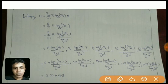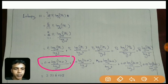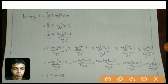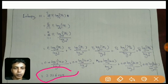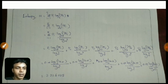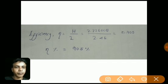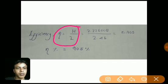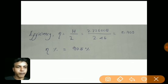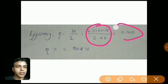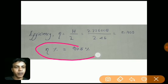Substituting the values of all probabilities into the entropy formula, the entropy for this problem is 2.226005 bits. The efficiency is entropy divided by average codeword length: 2.226005 / 2.46 = 0.905, which gives a percentage efficiency of 90.5%.